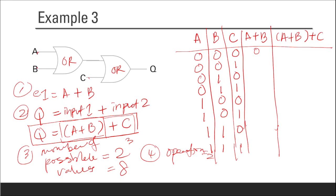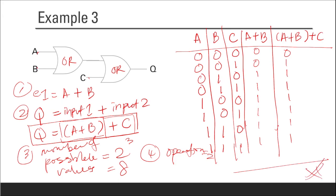Now fill in the A plus B column: 0+0=0, 0+0=0, 0+1=1, 0+1=1, 1+0=1, 1+0=1, 1+1=1, 1+1=1. Then for A plus B plus C: 0+0=0, 0+1=1, 1+0=1, 1+1=1, 1+0=1, 1+1=1, 1+0=1, 1+1=1. That completes the truth table for this logic circuit.